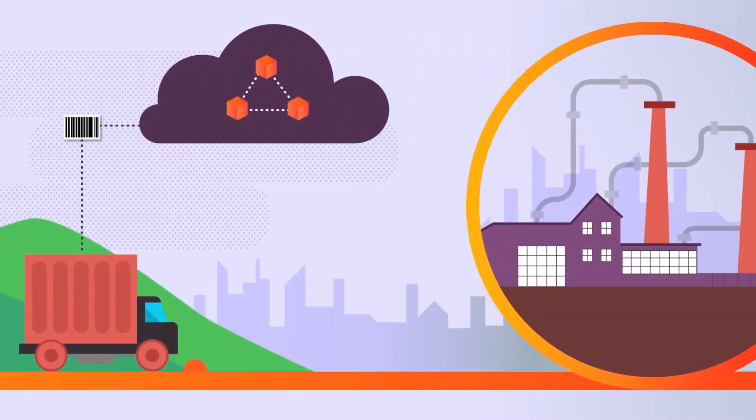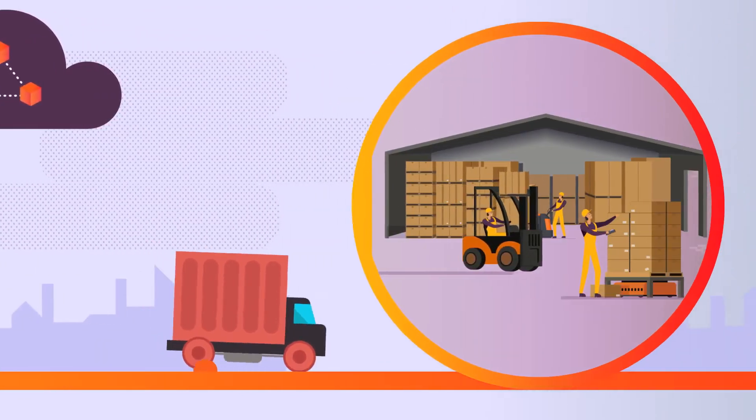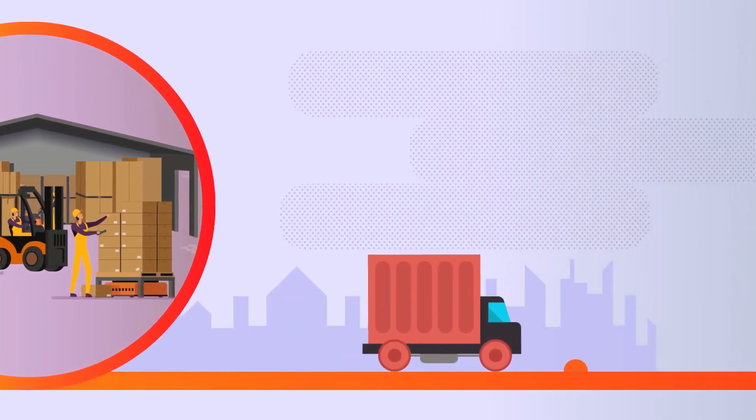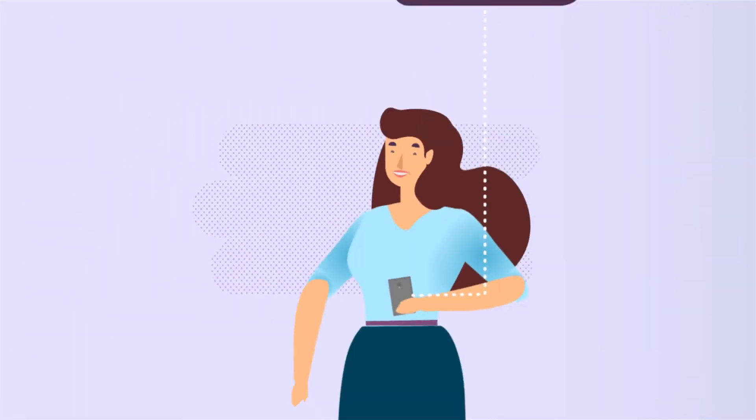Using SupplyBlock's decentralized ledger, smart contracts, and the SUPX token, Jenny can ensure that she has complete visibility and control over all of the data involving her products as they move along the supply chain.